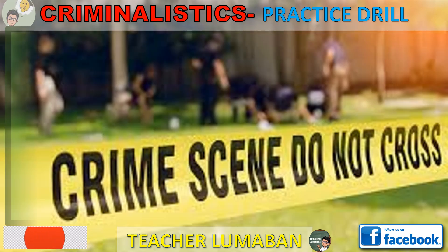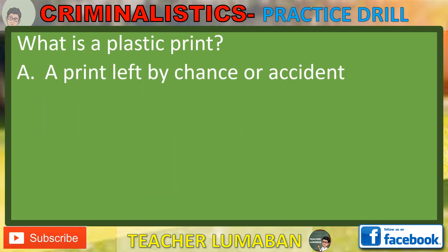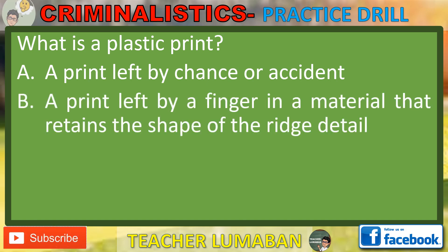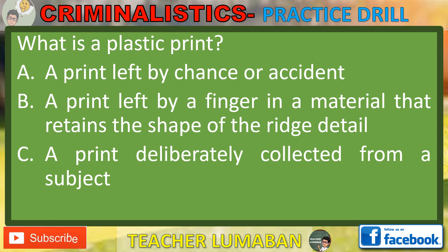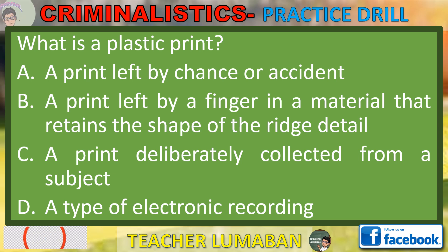What is a plastic print? Letter A: A print left by chance or accident. Letter B: A print left by a finger in a material that retains the shape of the ridge detail. Letter C: A print deliberately collected from a subject. Letter D: A type of electronic recording. Choose the suitable answer based on the given choices.